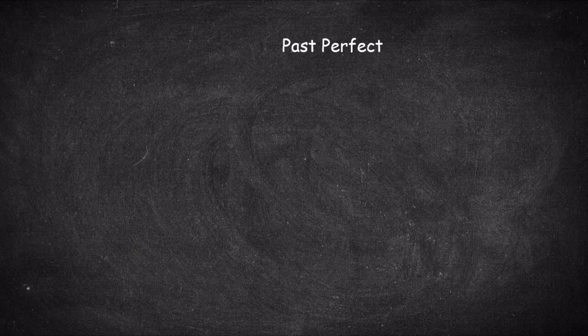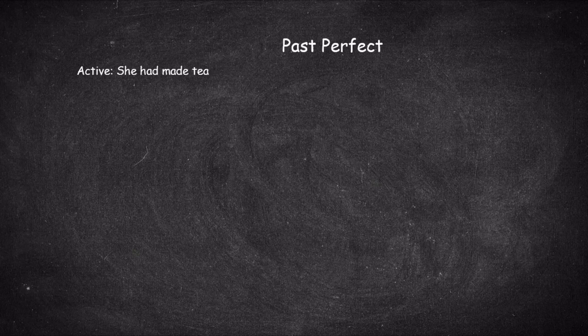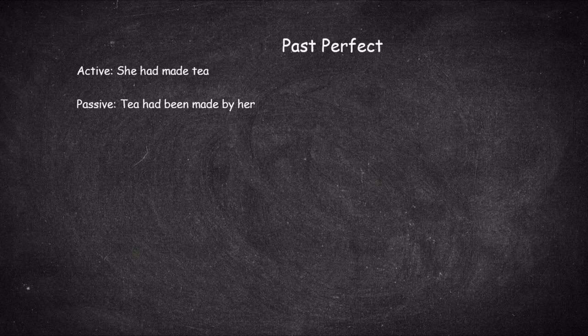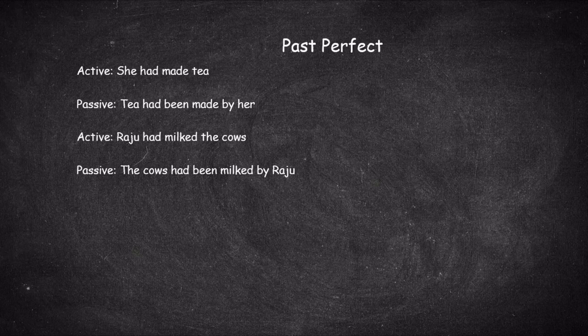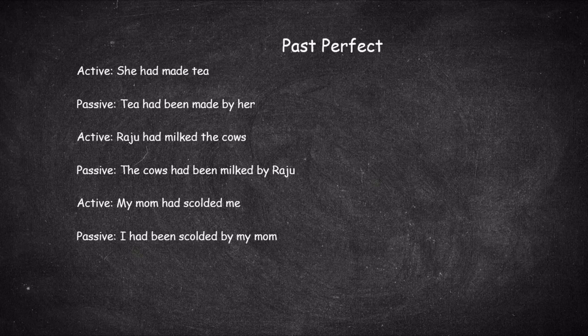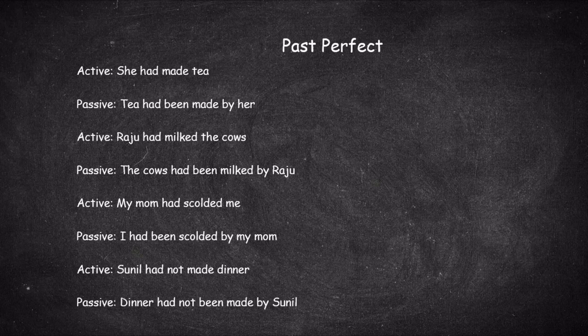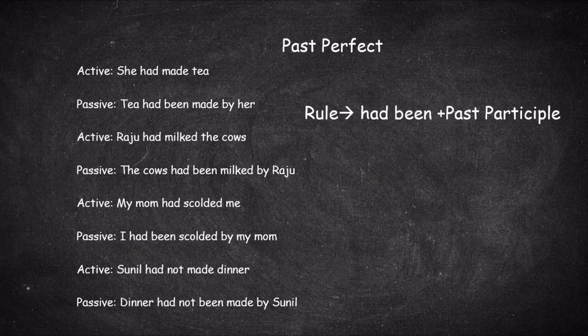The last tense is past perfect. The past perfect is composed of 'had' plus the past participle of the main verb. 'She had made tea' becomes 'Tea had been made by her.' 'Raju had milked the cows' becomes 'The cows had been milked by Raju.' 'My mom had scolded me' becomes 'I had been scolded by my mom.' For a negative: 'Sunil had not made dinner' becomes 'Dinner had not been made by Sunil.' The rule is simply: had plus 'been' plus the past participle.